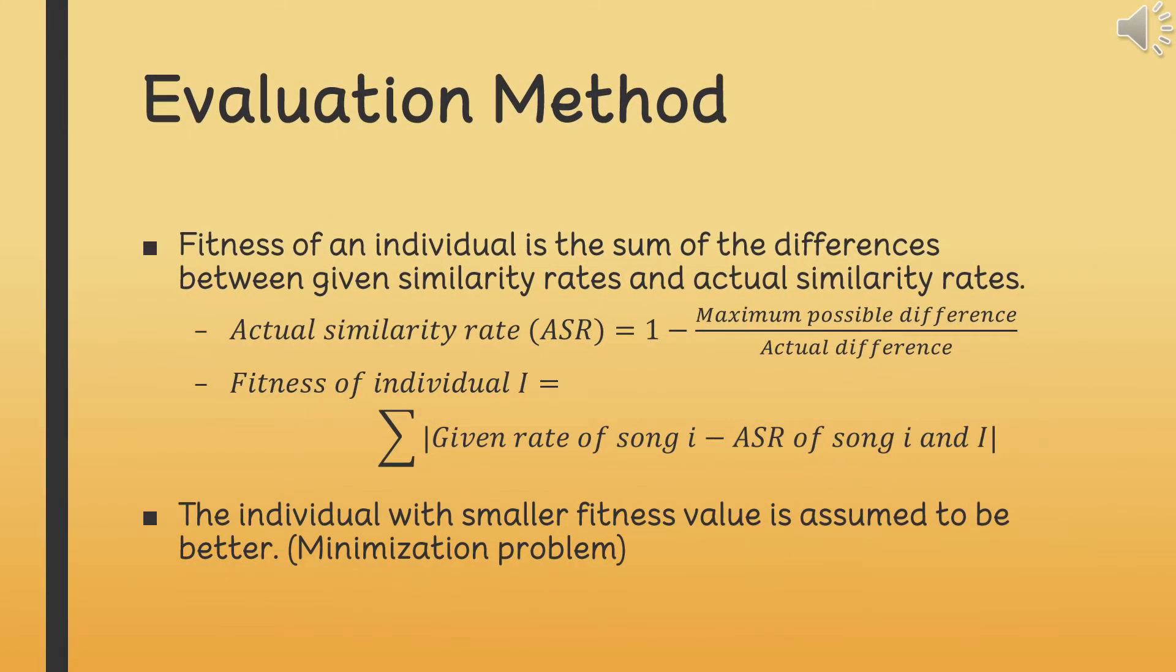Intuitively, if we take the difference between the given similarity rate of each song in the text file and the actual similarity rate of an individual, then we sum these differences, we will get the fitness value of that individual. Actual similarity rate and fitness calculation can be formulated as in the current slide. Please notice that an individual with smaller fitness value is assumed to be better.